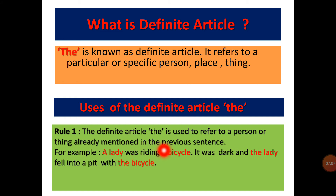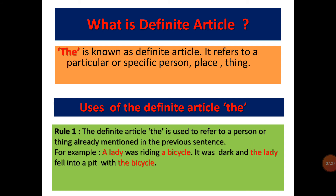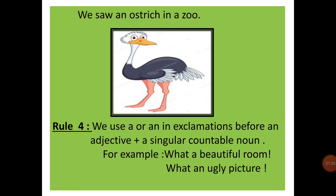'A lady was riding a bicycle.' This is the first line of a paragraph, so a will come because we are referring to them for the first time. But again, if we talk about the same lady and the same bicycle, then in the next lines we use the article the. 'It was dark and the lady fell into a pit with the bicycle.' Here they are coming for the second time, that's why we use the article the.